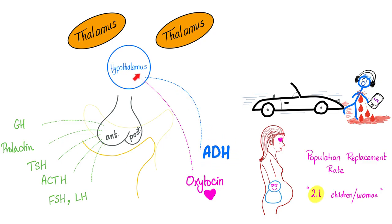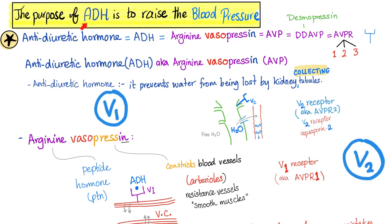The reason ADH comes from the hypothalamus and not from the pituitary is that the hypothalamus is part of the limbic system, which means it's related to memory — and you should remember this so that you do not repeat your mistake twice. The only purpose of antidiuretic hormone is to raise your blood pressure, and it achieves this by three receptors: V1, V2, and V3.